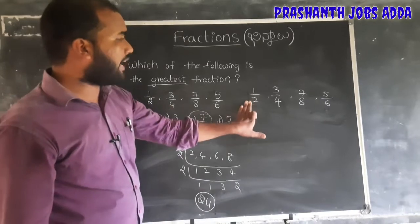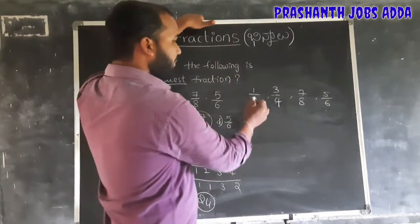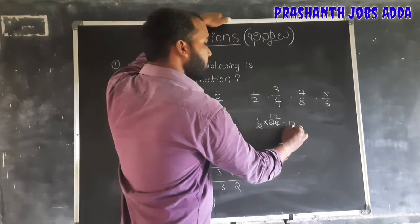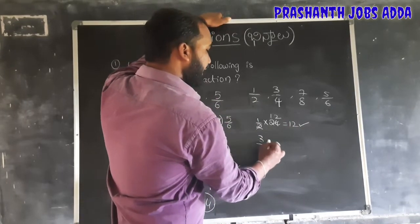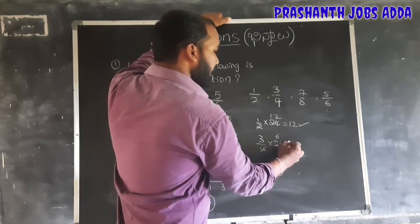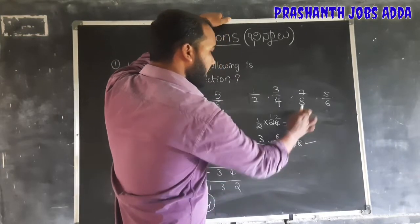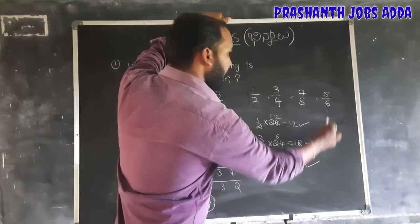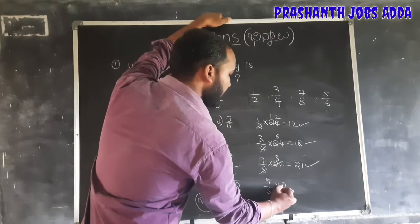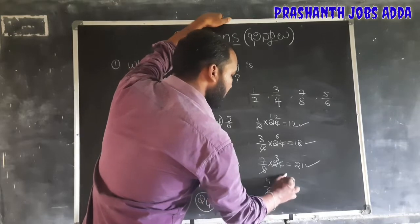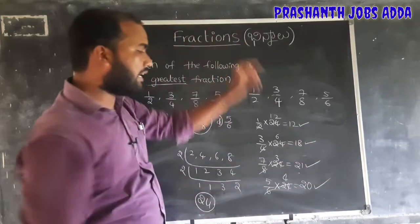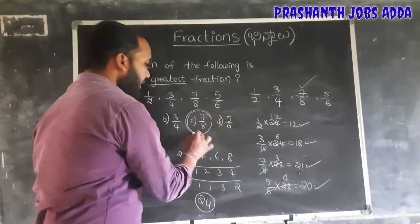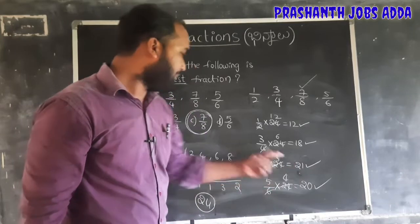In the LCM method, multiply each fraction by the LCM. For 1 by 2 multiplied by 24, the answer is 12. The 24th values are compared, and the largest value is the greatest fraction. So the third value — 7 by 8 — is the greatest fraction.